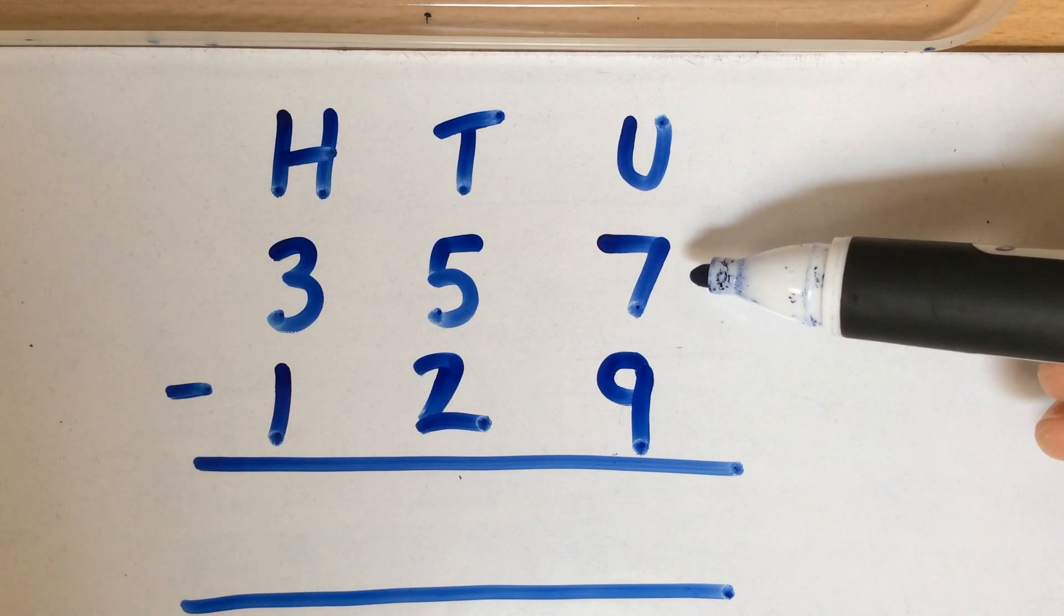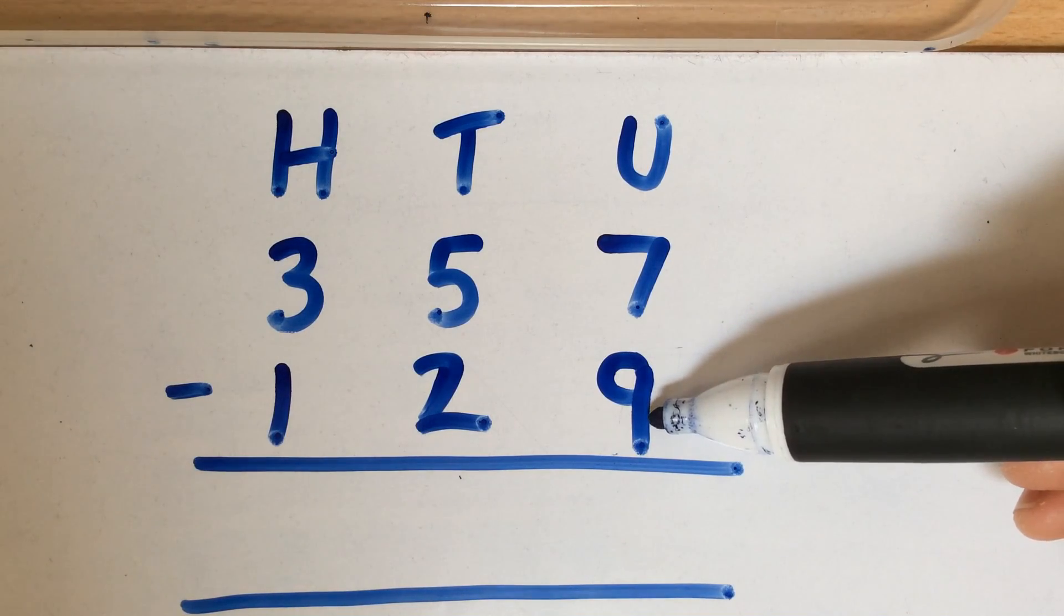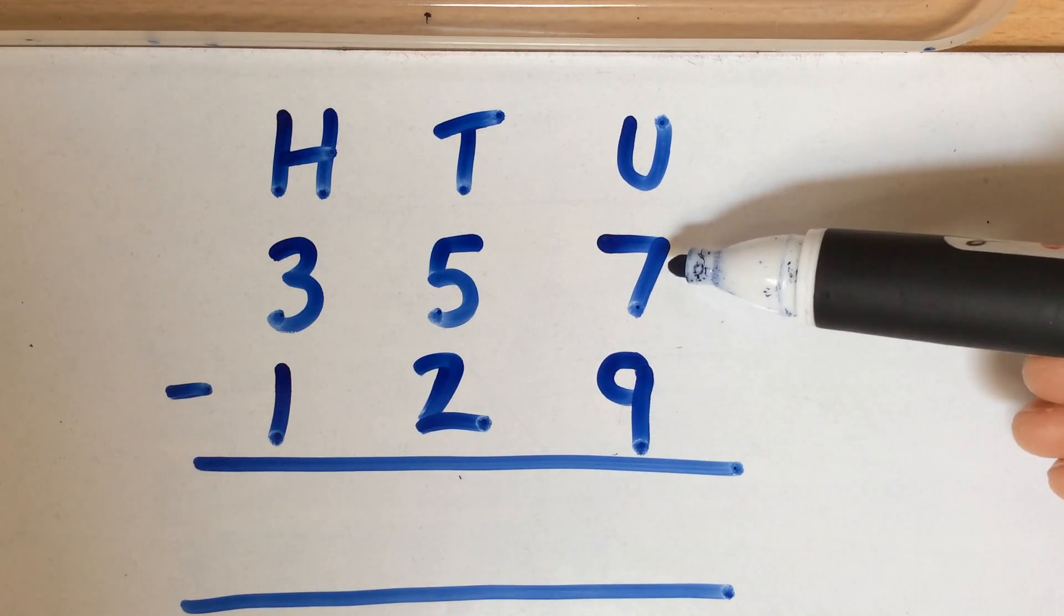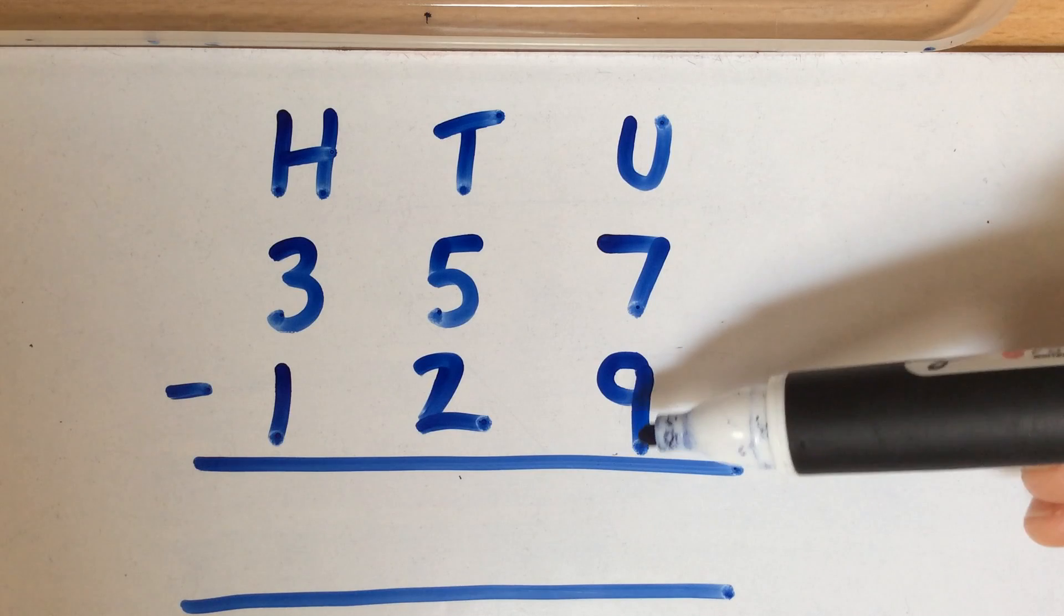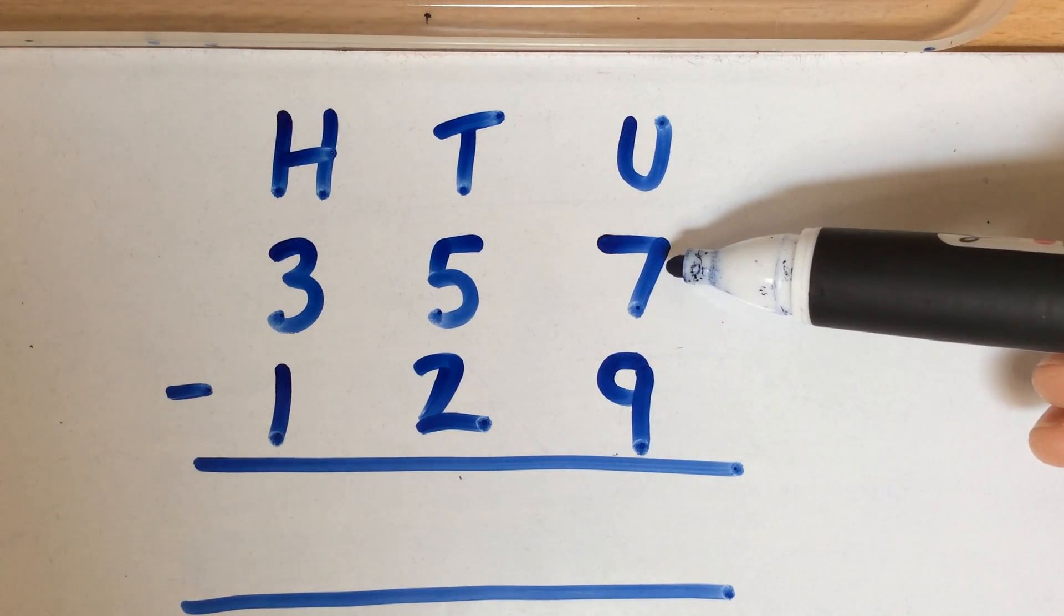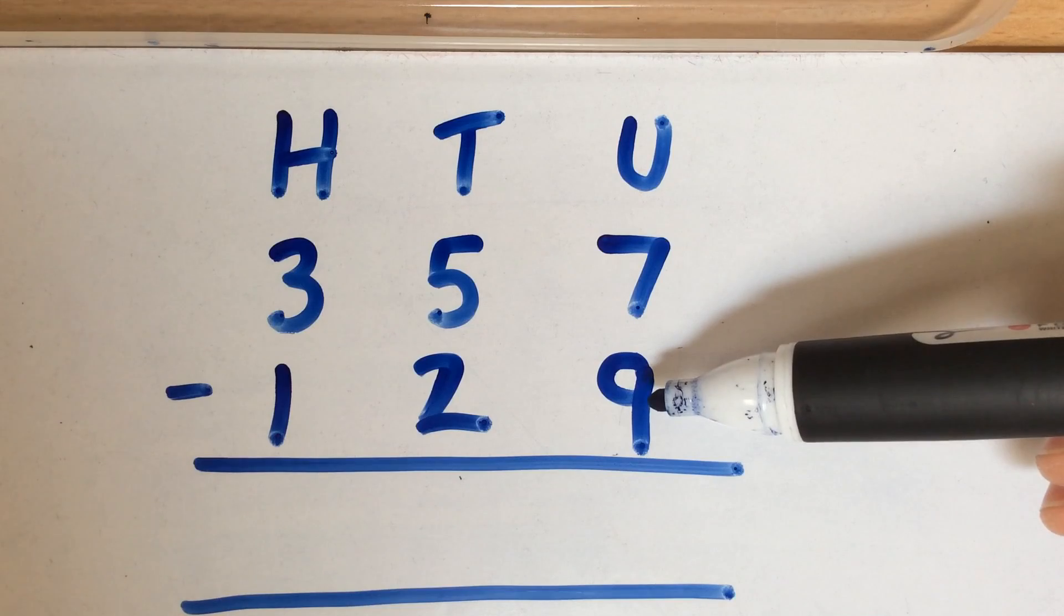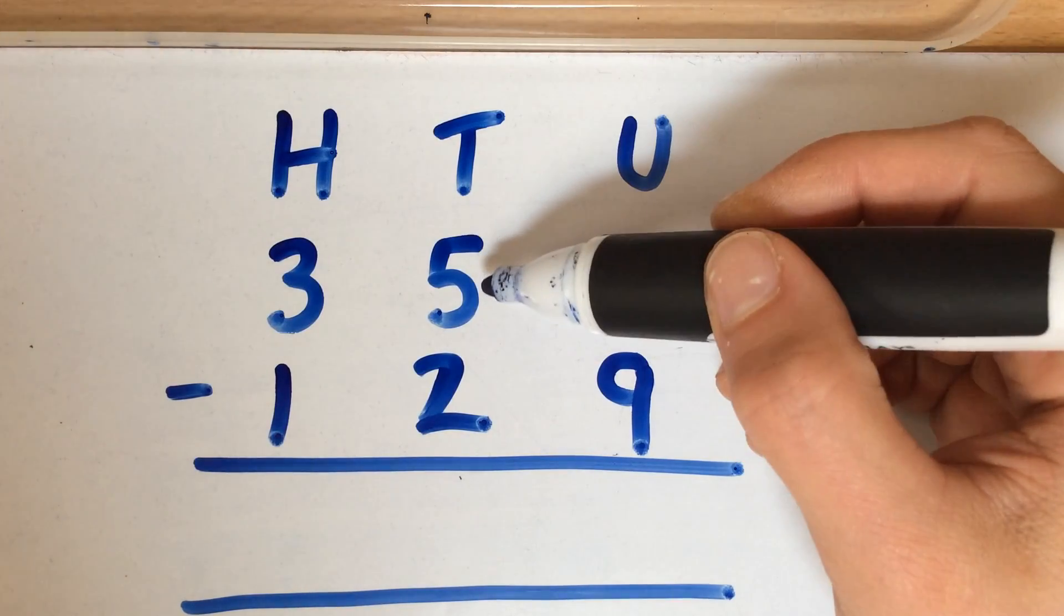So in this case, lots of children might make the mistake of deciding they're going to do 9 take away 7 and writing it down to 2. But again, the emphasis must be that we've got to start at the top number and take away the bottom number. So if we've got 7, we can't take away 9 because that's too many. And in this case, we've then got to borrow an extra 10.